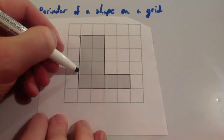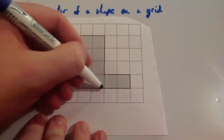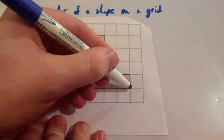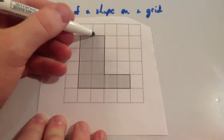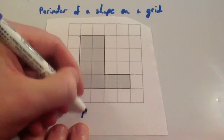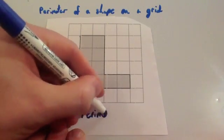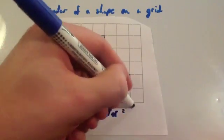So remember you're just going to go 1, 2, 3, 4, 5, 6, 7, 8, 9, 10, 11, 12, 13, 14, 15, 16. So the perimeter is 16cm.